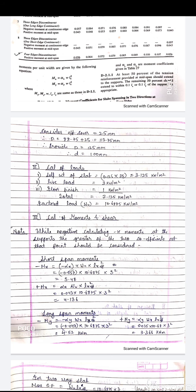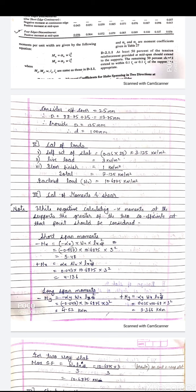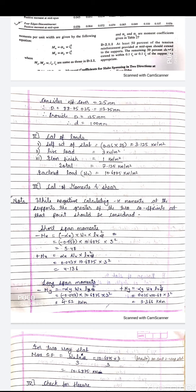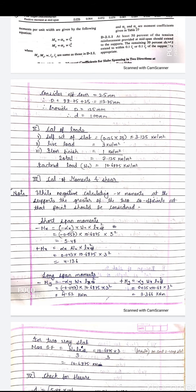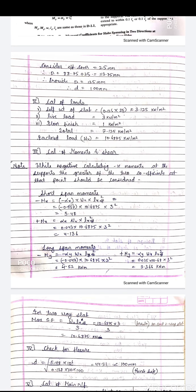Next, calculate loads. Self-weight of slab = 0.125 m × 25 kN/m³ = 3.125 kN/m². Live load = 3 kN/m², floor finish = 1 kN/m². Total load = 7.125 kN/m². For per-meter width, total load = 7.125 kN/m. Factored load w = 7.125 × 1.5 = 10.6875 kN/m.